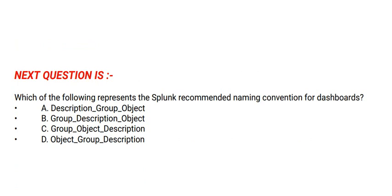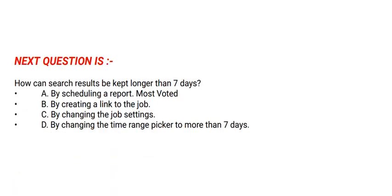The correct option is Option C. Option A: By scheduling a report, most voted. Option B: By creating a link to the job. Option C: By changing the job settings. Option D: By changing the time range picker to more than 7 days.